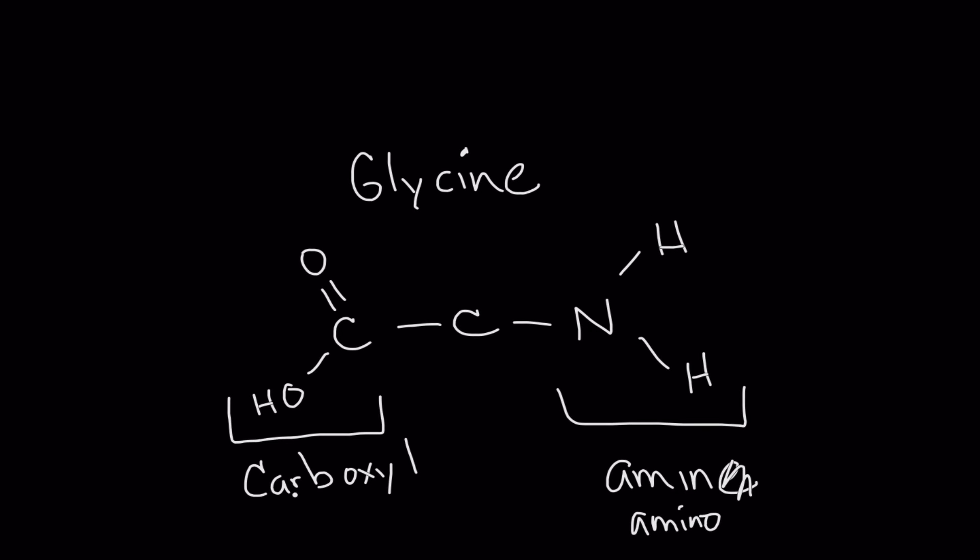Remember, carboxyls produce acids so this is a very simple amino acid. You can always tell an amino acid because it's got this N-C-C or C-C-N structure and you've got an amine group at one end and a carboxyl group at the other.